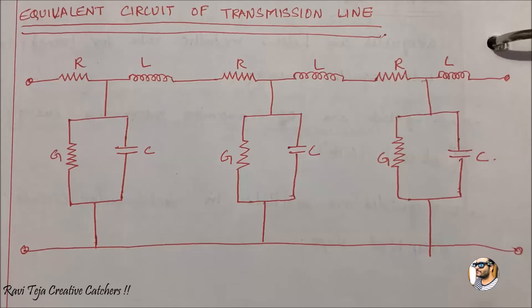If you draw an equivalent circuit of a transmission line using those four primary constants — resistance, inductance, conductance, as well as capacitance.